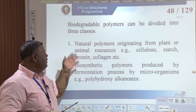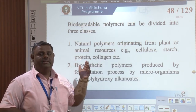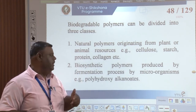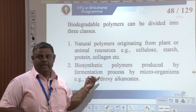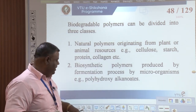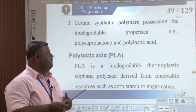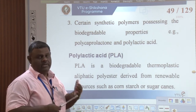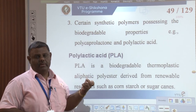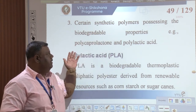Biodegradable polymers can be divided into three classes. First, natural polymers originating from either plants or animals — starch is an example from plant origin, and collagen originates from animals. Second, biosynthetic polymers produced by fermentation, particularly by microorganisms — example: polyhydroxyalkanoates. Third, polymers processed from bioresources — polylactic acid is an example here; lactic acid is the fermentation product which is then polymerized to obtain polylactic acid, making it a synthetic polymer using a bioresource.